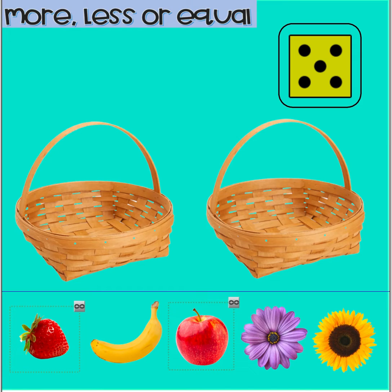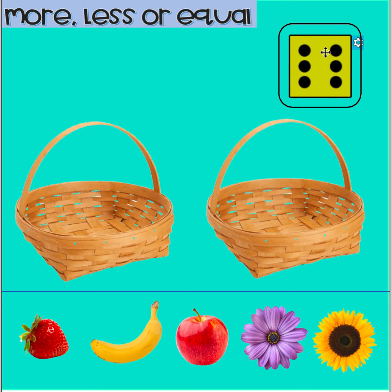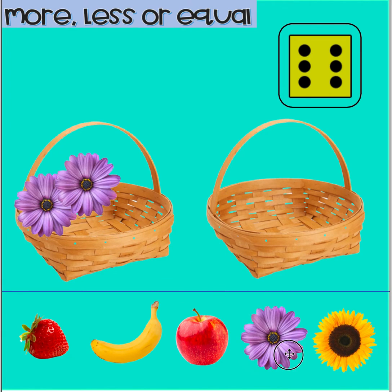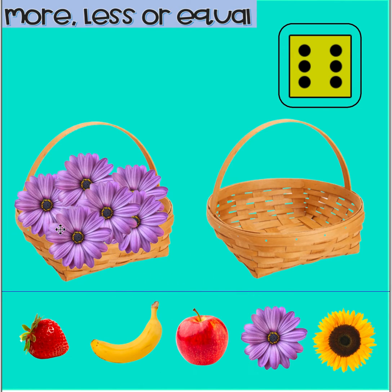Now this time we're going to compare the two flowers — the daisy and the sunflower. Okay, let me roll the dice. What number is that? Six. Great job. So we need six daisies in the first basket. Count with me: one, two, three, four, five, six.